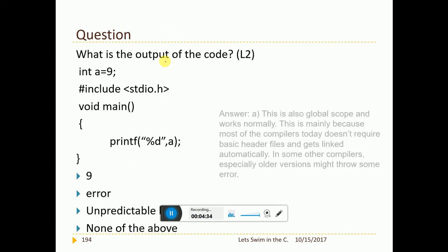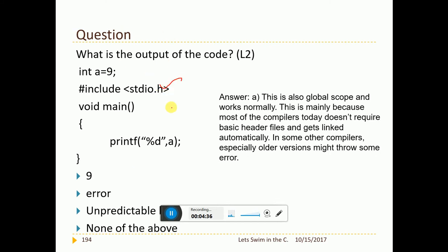Now, int a equal to 9 and then I have written the header file and the same question. This is also global variable. Since most of the compilers now does not even require this. This line is not required by most of the compilers. So, this is global variable again. So, the answer stays the same. My explanation remains the same.